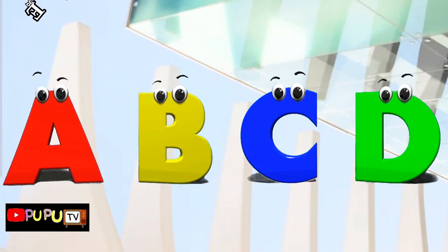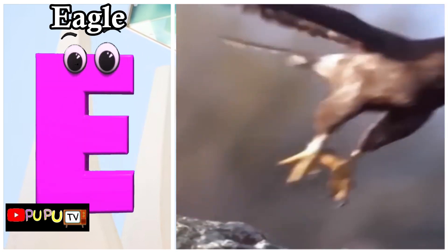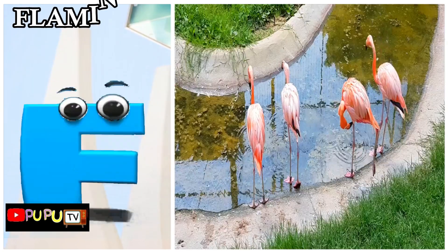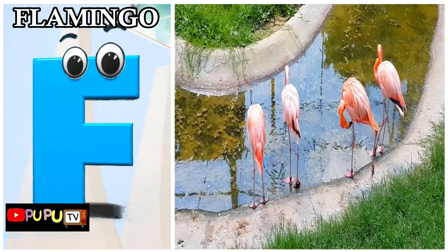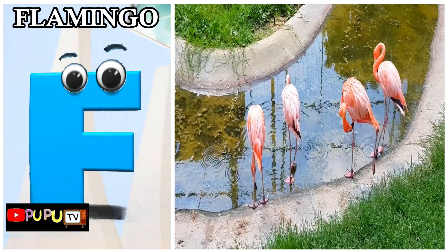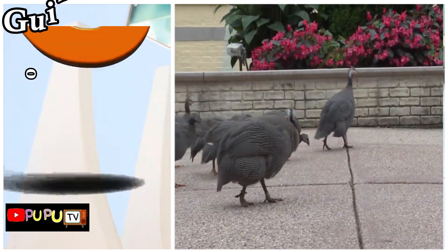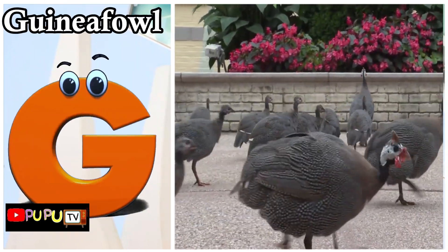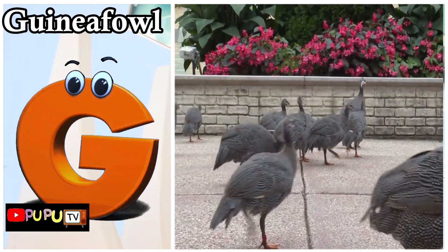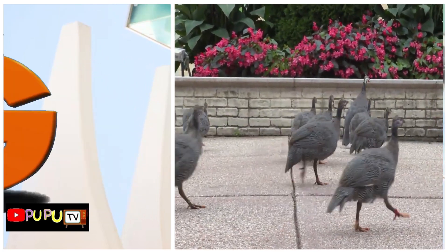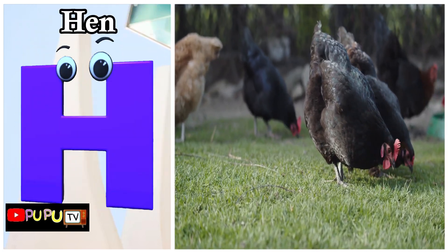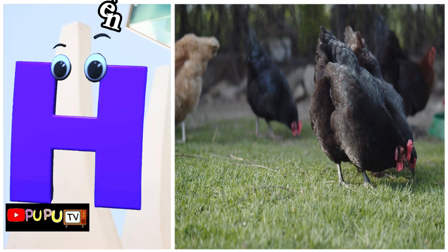E is for eagle, eh eh eagle. F is for flamingo, fuh fuh flamingo. G is for guinea-fowl, guh guinea-fowl. H is for hen, huh huh hen.